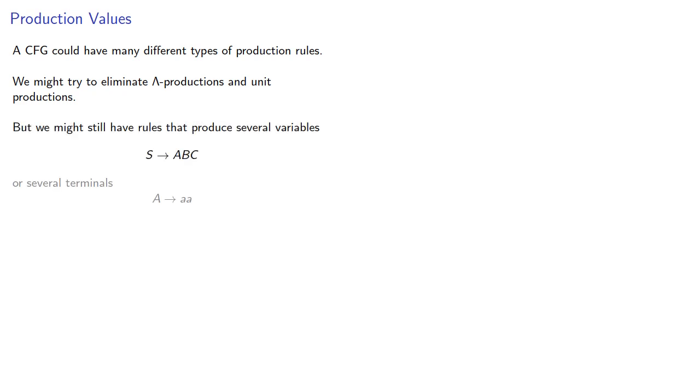A context-free grammar can have many different types of production rules. We might try to eliminate lambda productions and unit productions, but we might still have rules that produce several variables, or several terminals, or any mix of terminals and variables.